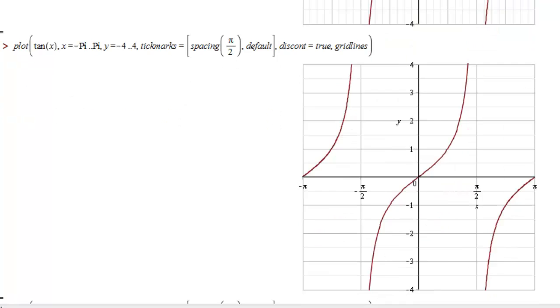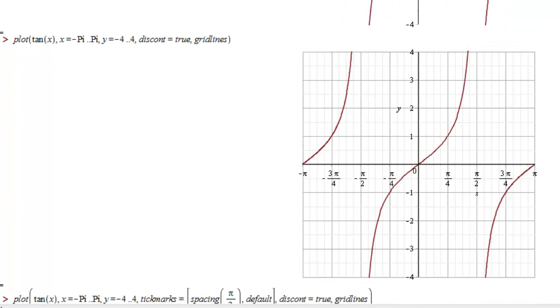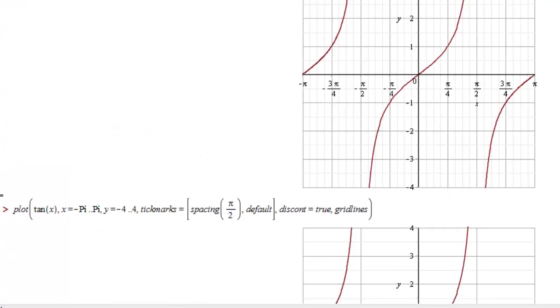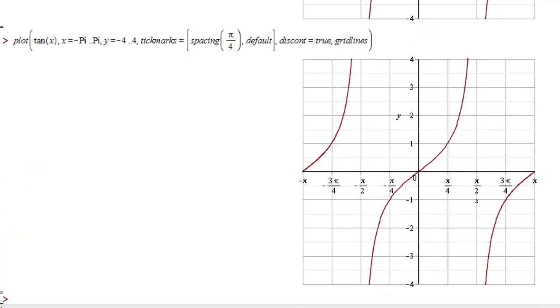So there's some different ways you can represent the tangent function using the plot command in Maple with various options such as tick marks, discont, and grid lines.